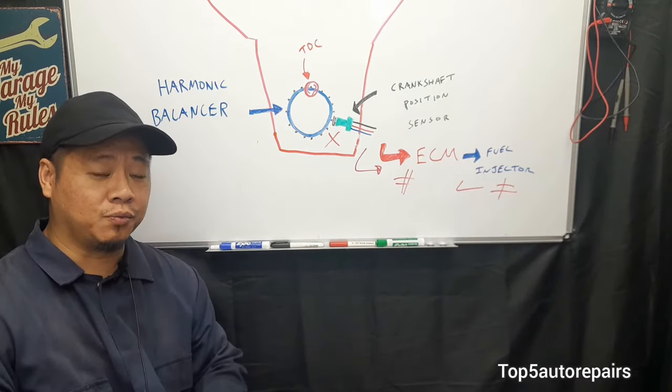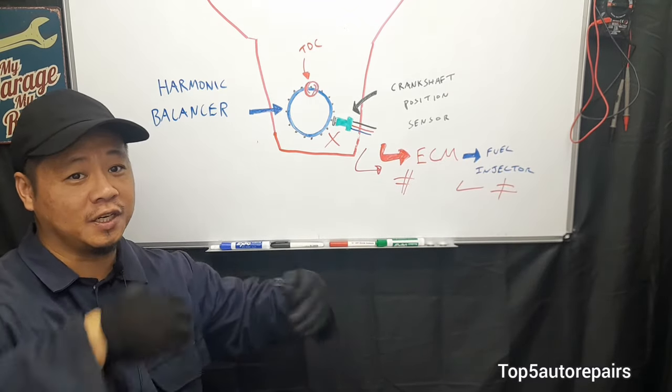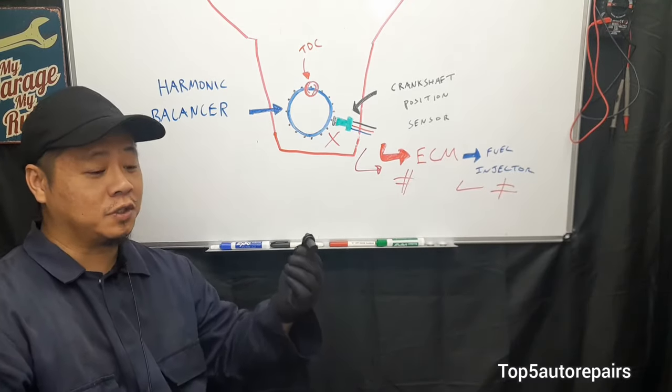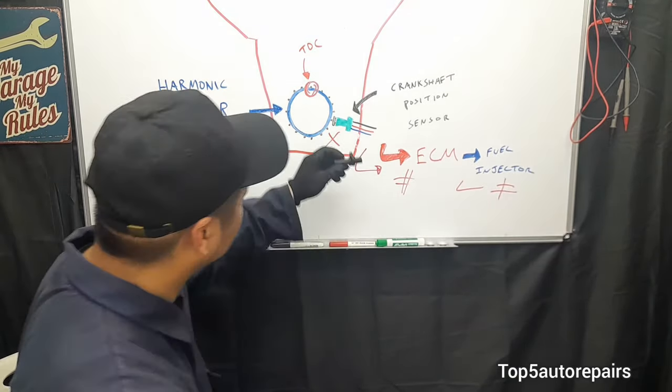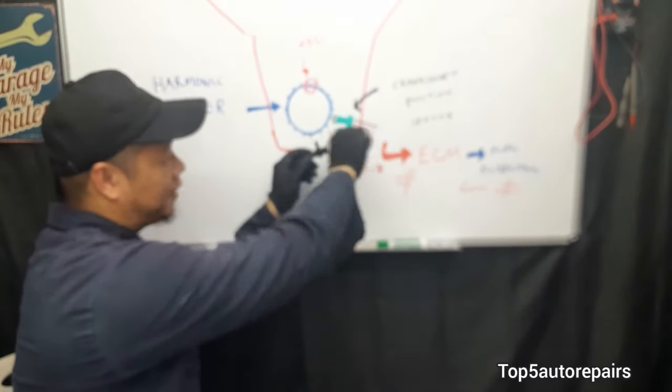If you're having an intermittent problem, that means the engine can start. Let's say you start your engine and it's running for a good minute or so. What you can do is grab the wire, the connection, wiggle it around, and tug it a little bit.